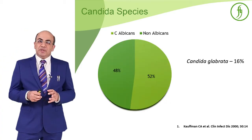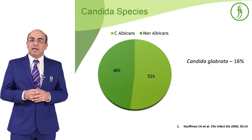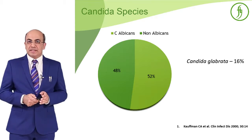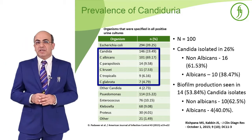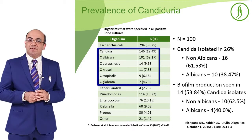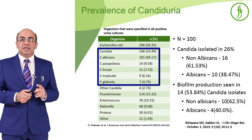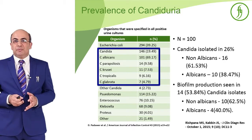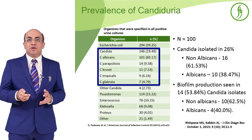Looking at species distribution, Candida albicans is the predominant species, though the difference between albicans and non-albicans ratio is narrowing. Candida glabrata is also on the rise. Studies show albicans forms about 60 to 65% of isolates, with the remainder being non-albicans species. Notably, non-albicans species have a tendency toward higher biofilm formation, which can result in prolonged candiduria and prolonged infections.